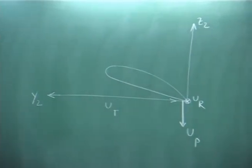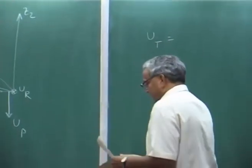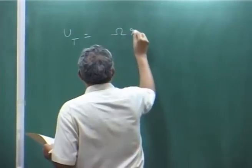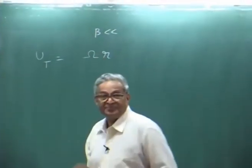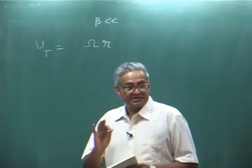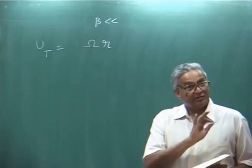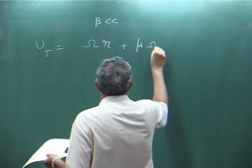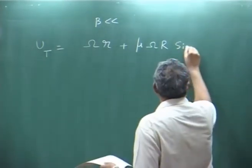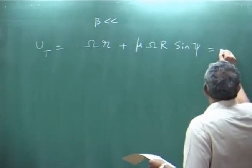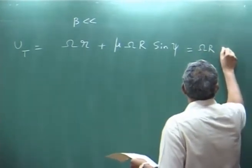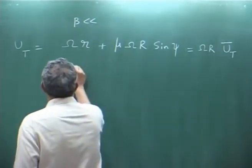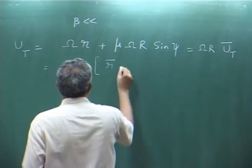Your u_t, we wrote last time — it is essentially omega*r. We make an assumption: please note beta is small, so cosine beta is 1, sin beta is beta, and lambda is also small. Based on that, we write the assumption: this is omega*r plus mu*omega*R. We will write it as, taking omega*r outside, r_bar plus mu.